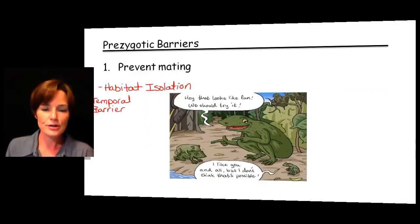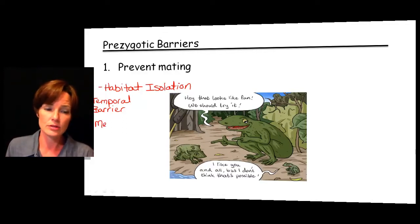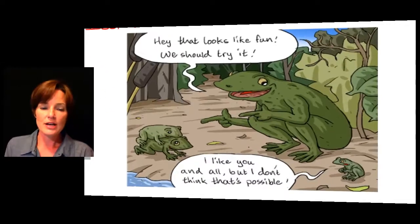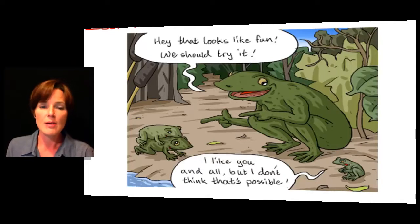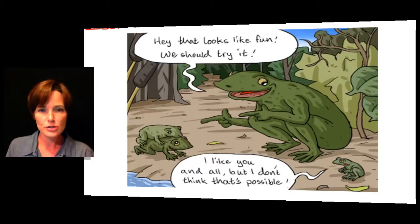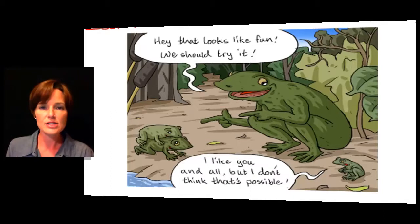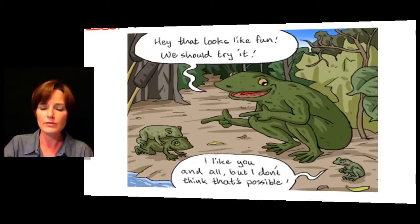This picture shows that sometimes there can be mechanical prevention. Here we've got a very large frog and a very tiny one. Those two may look like similar individuals and may live in the same place, but mechanically it just isn't going to work for those two to reproduce or copulate with each other. So we don't expect to get any reproduction or viable offspring from that pairing.